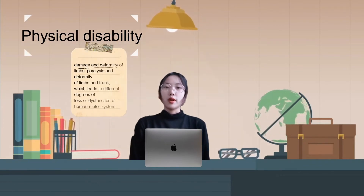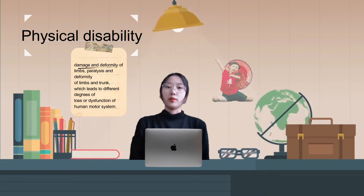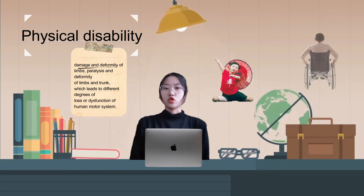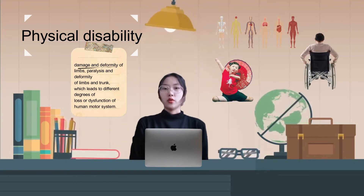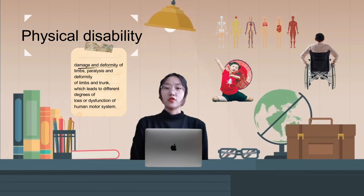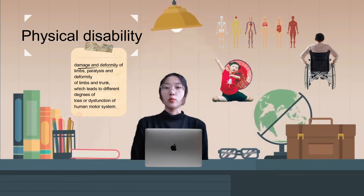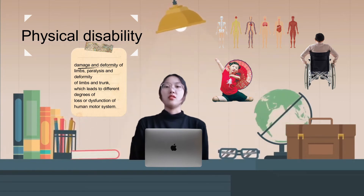Hi, I'm Huang Ruizie. Physical disability refers to the damage and deformity of limbs, paralysis and deformity of limbs and trunk, which leads to different degrees of loss or dysfunction of the human motor system.